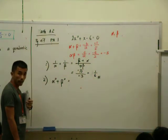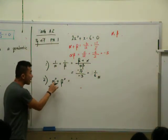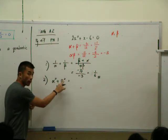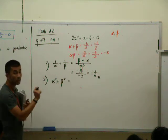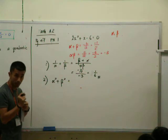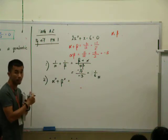Okay, the second part: alpha square plus beta square. This one is based on the formula that I want you to remember. So everyone, let's state the formula together.